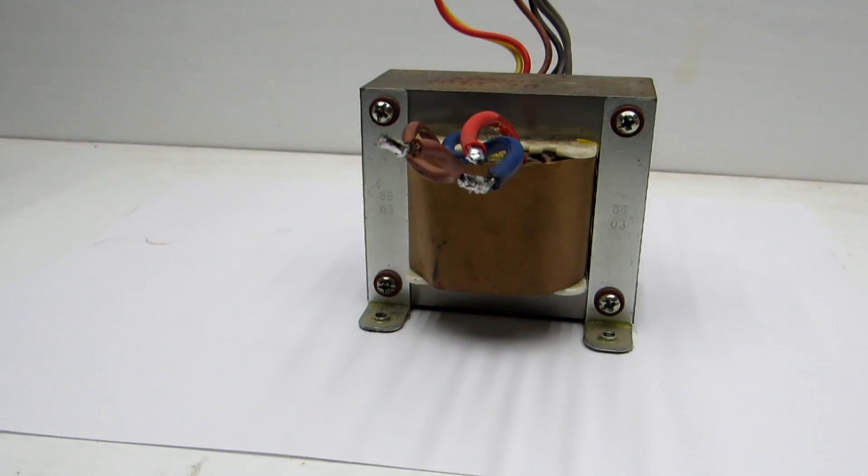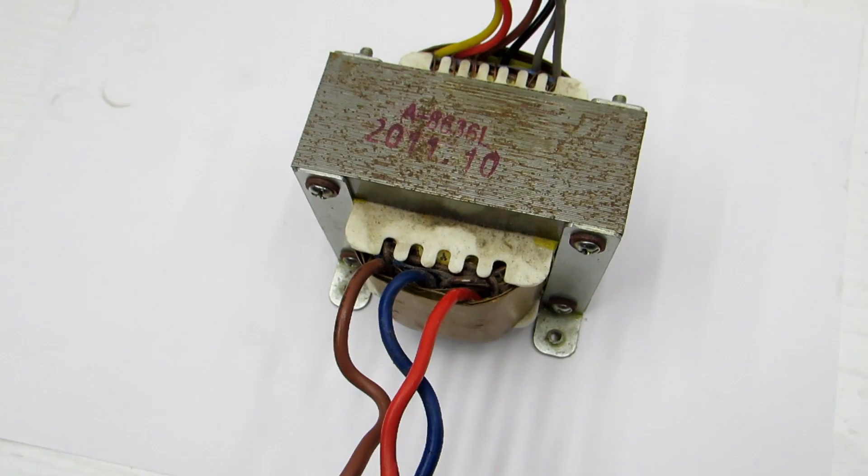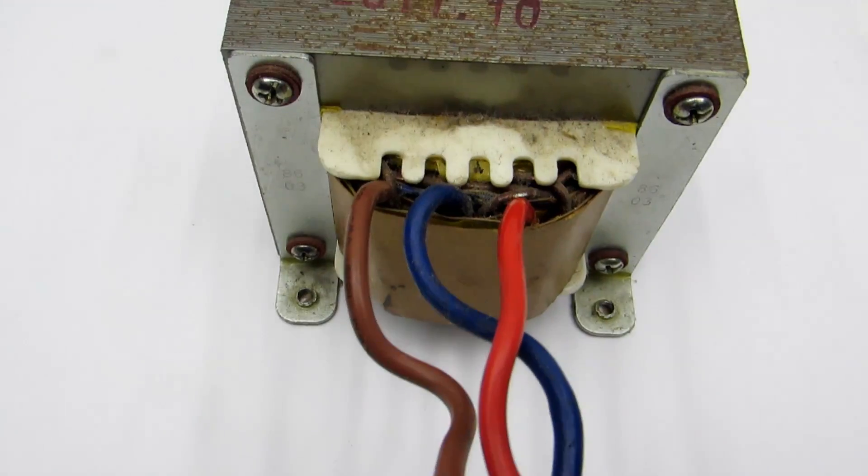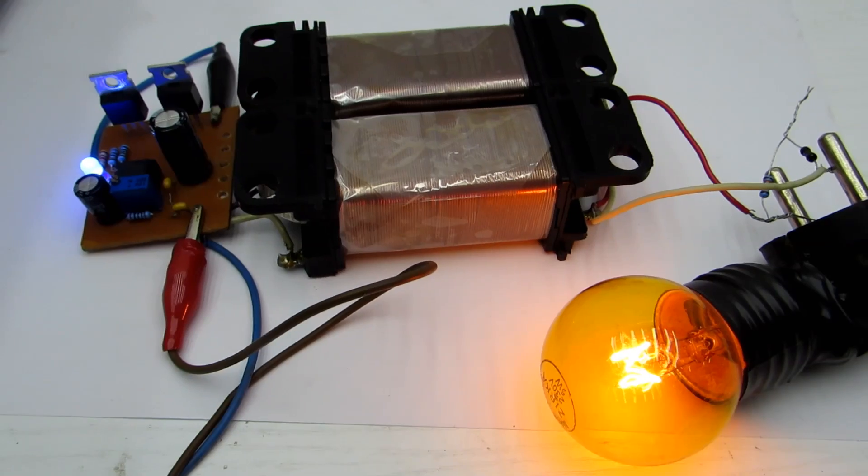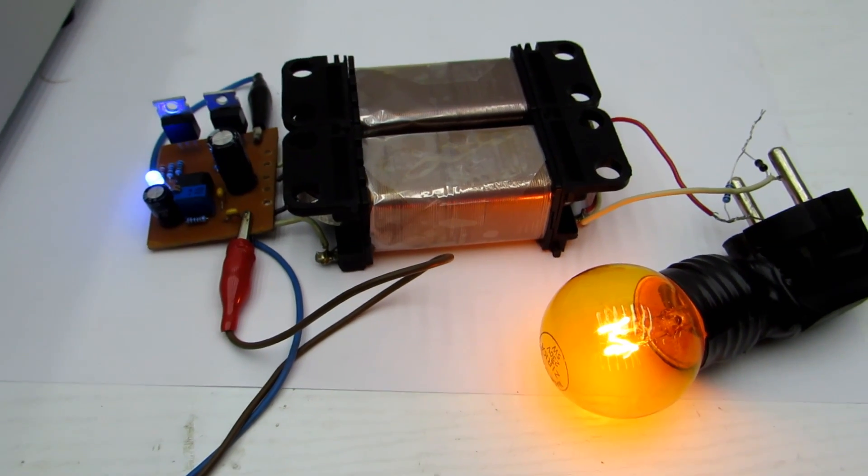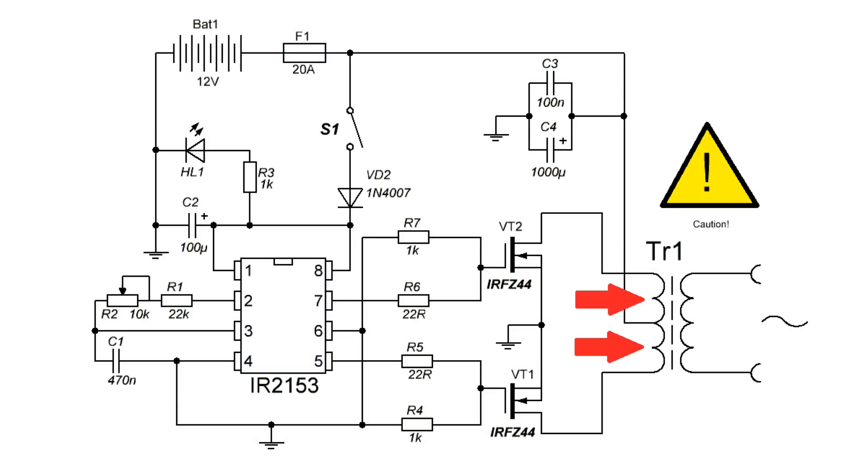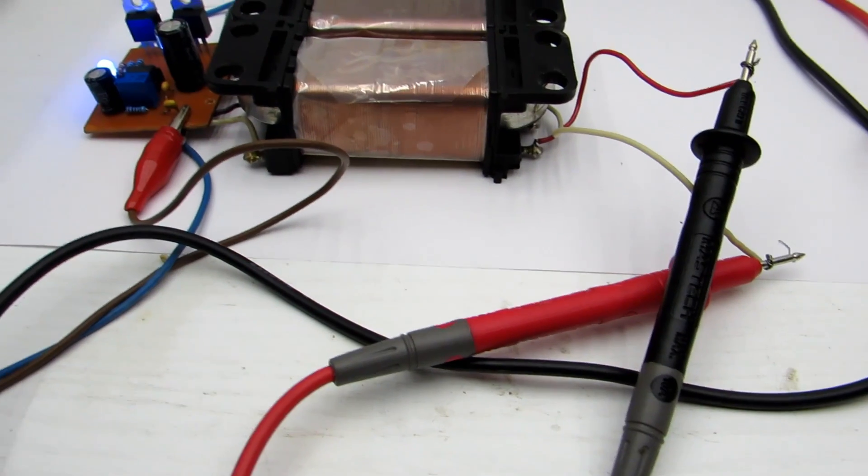This scheme worked, but no load current was about 1 ampere. That's a lot. Should not exceed 500 mA for such schemes. Therefore, I advise to use transformers with a voltage of 12 to 16 volts in each arm. The secondary winding of the transformer is for 220 volts.